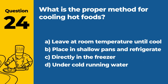Question 24. What is the proper method for cooling hot foods? a. Leave at room temperature until cool. b. Place in shallow pans and refrigerate. c. Directly in the freezer. d. Under cold running water. Answer b. Place in shallow pans and refrigerate. The proper method for cooling hot foods is to place them in shallow pans and refrigerate to allow for quick and even cooling.